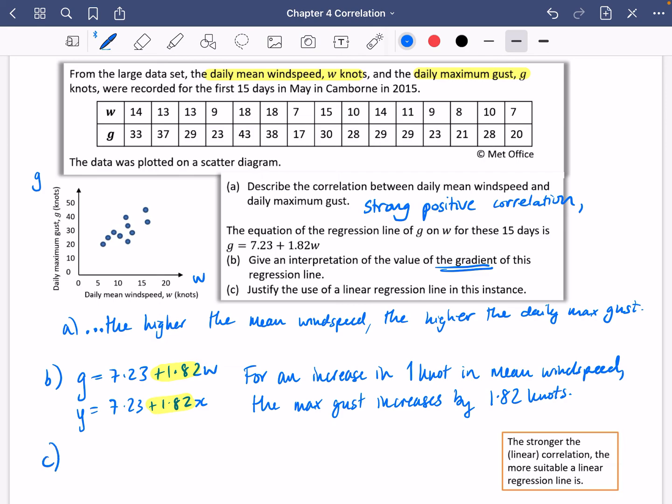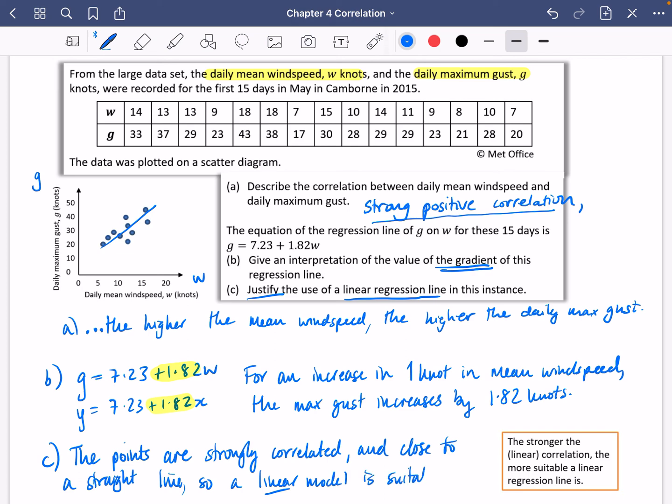Now part C of the question says justify the use of a linear regression line in this instance. And I think the reason that we can do a linear regression line in this instance is because there is a strong positive correlation. They look like they are along a straight line here. So justify the use of a linear regression line in this instance. The points are strongly correlated and close to a straight line. So a linear model is suitable or we could say the word justified.